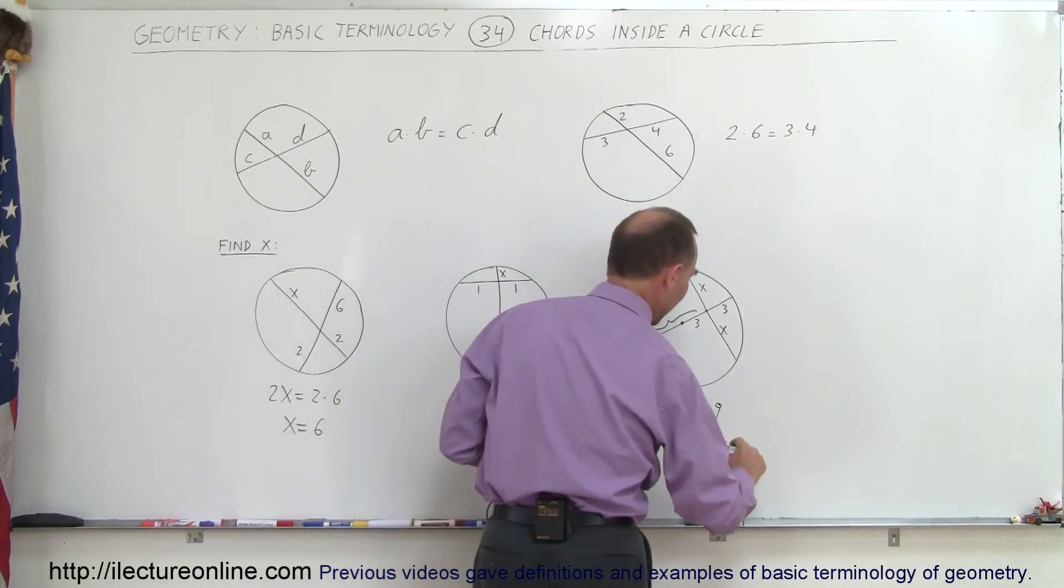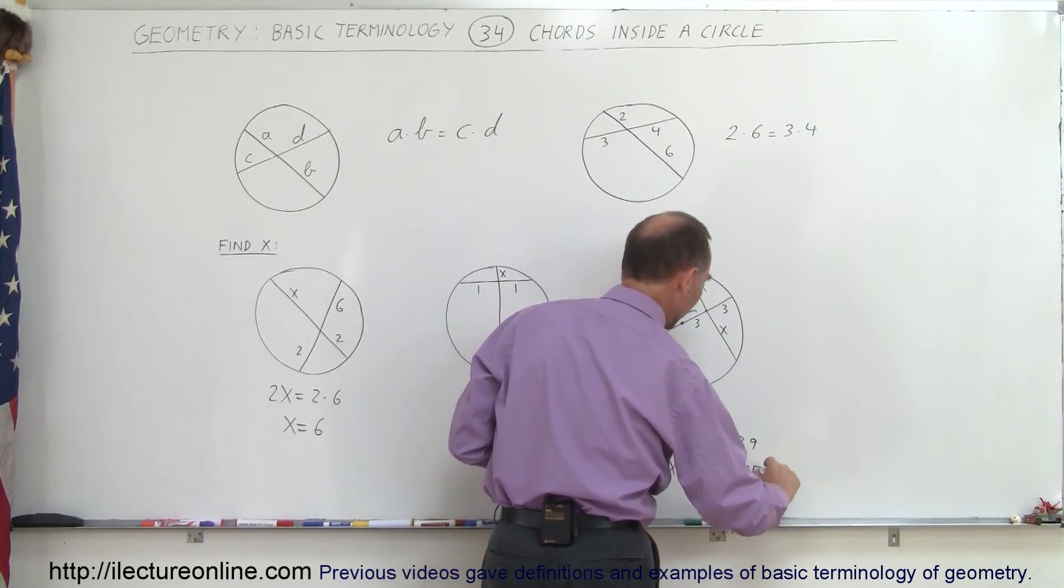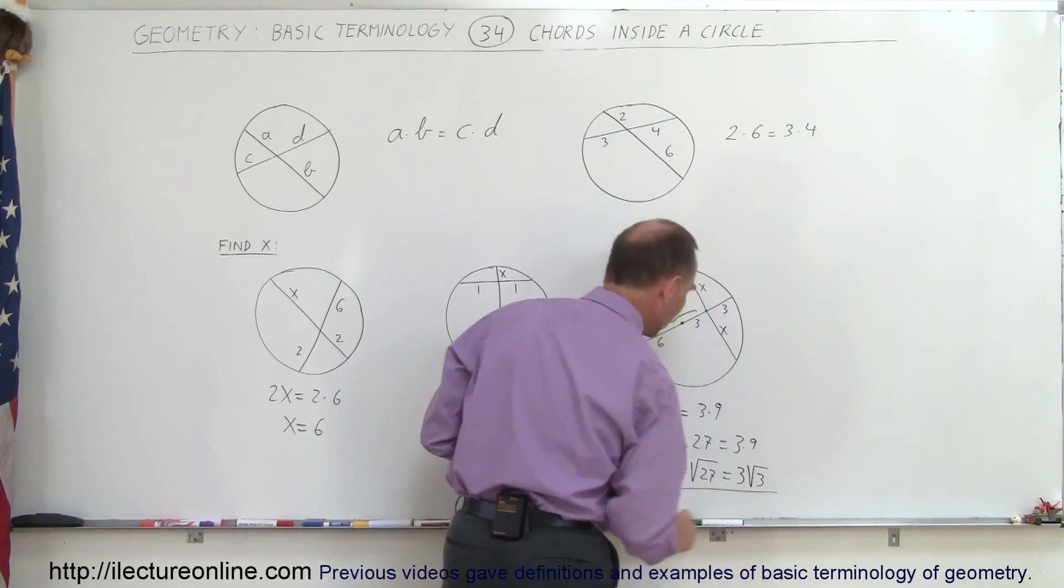Of course, 27 can be written as 3 times 9. In other words, this can be written as 3 times the square root of 3 as well. Same thing.